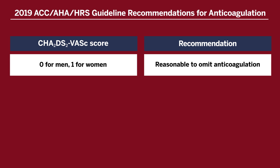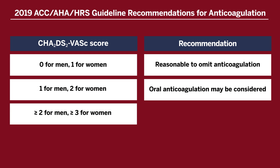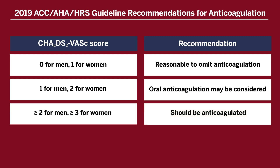A CHADS-VASc score of zero in men or one in women means it's reasonable to omit oral anticoagulation because they're at very low risk for stroke. With a score of one for men or two for women, oral anticoagulation may be considered. If the CHADS-VASc score is two or greater for men or three or greater for women, those patients should probably be anticoagulated.